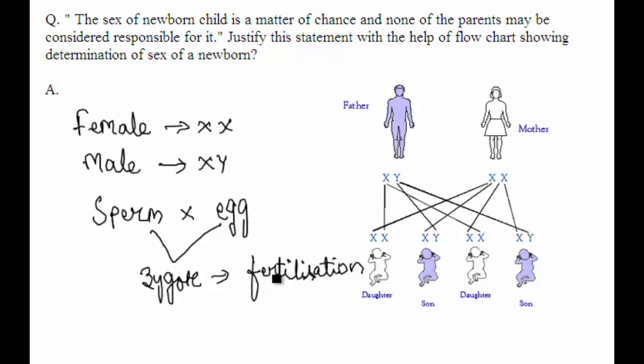The sperm has either X or Y chromosome and egg has only X chromosomes. If this sperm carries Y chromosome and it fuses with egg, then the newly born child will be female.